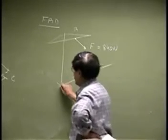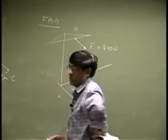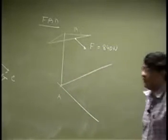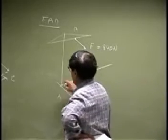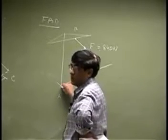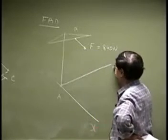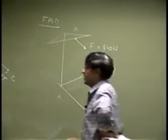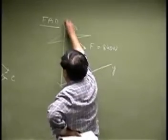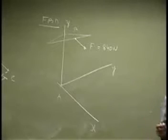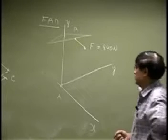Then A is a support which is totally fixed. So, if it's totally fixed then this particular point of the pole cannot move in X direction, it cannot move in the Y direction and it cannot move in the Z direction. So, there is absolutely no translation at point A.